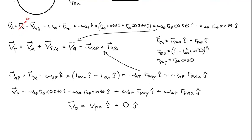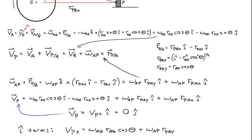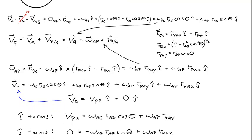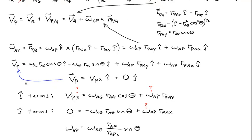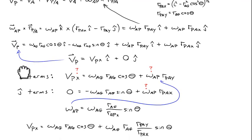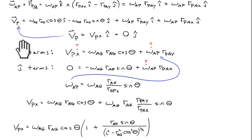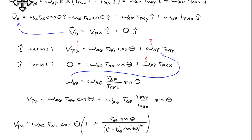Examining the i-hat and j-hat terms separately: equating the i-hat terms gives VPx equals omega AG times RAG cosine theta plus omega AP times RPAy. For the j-hat terms, the sum must equal zero — that's our constraint. This gives two equations and two unknowns: VPx and omega AP, the rate at which the linkage rotates. Solving for omega AP first: omega AP equals omega AG times RAG divided by RPAx times sine theta. Substituting RPAy and RPAx and all known values, I come up with VPx equal to 2.5 centimeters per second.